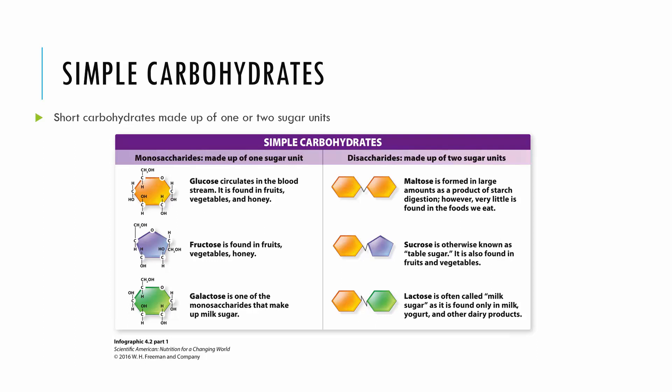For disaccharides, maltose is two glucoses put together, really formed as a product of starch digestion. Sucrose is what we think of as table sugar — one glucose and one fructose molecule put together. That white granulated sugar you add to your cereal is sucrose. Lactose is galactose and glucose put together, found only in milk, yogurt, and other dairy products. You may have heard of lactose intolerance, when someone has trouble digesting lactose.